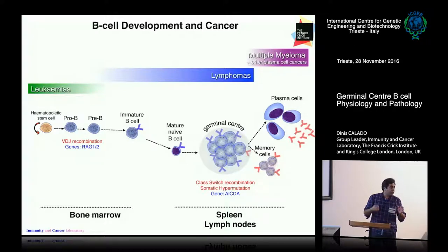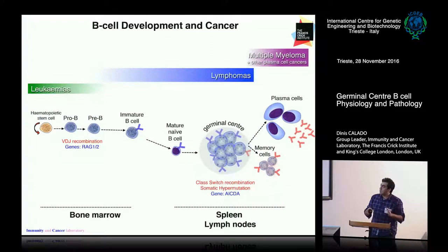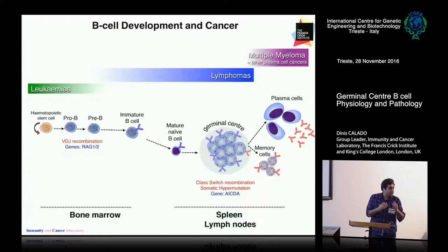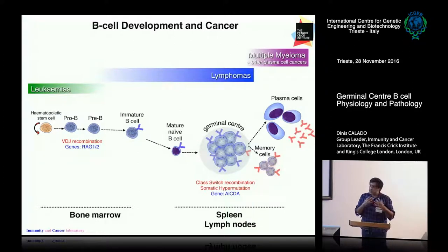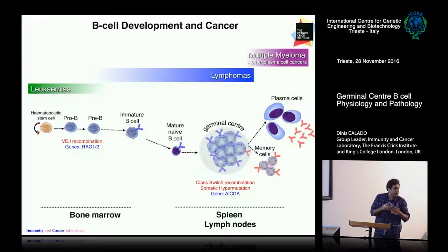Every day in your body you are forming germinal center cells and germinal center cell reactions against particular antigens or pathogens and you are quite okay. It may be that, as Jacob was saying, the immune system itself can recognize some of the cells that are becoming mutated and eliminates them from the system. In general, the process has a lot of safeguard mechanisms that make these cells disappear when they acquire mutations.